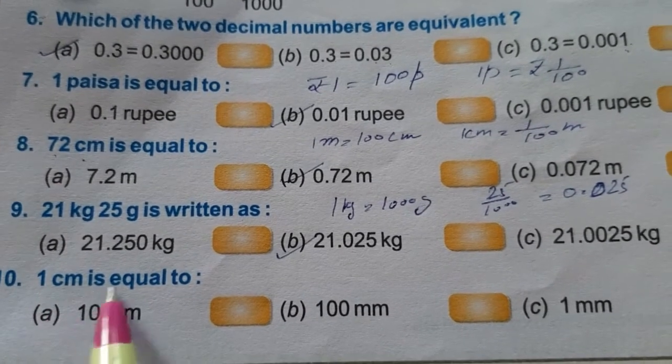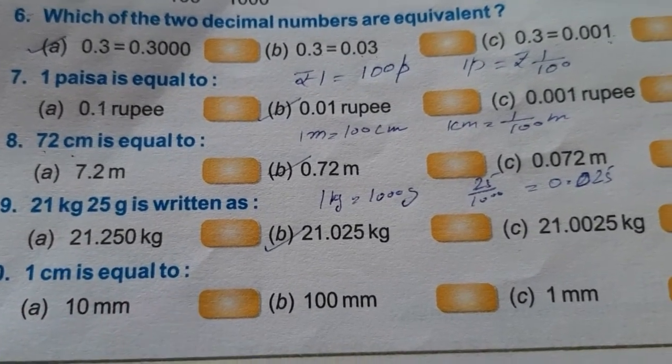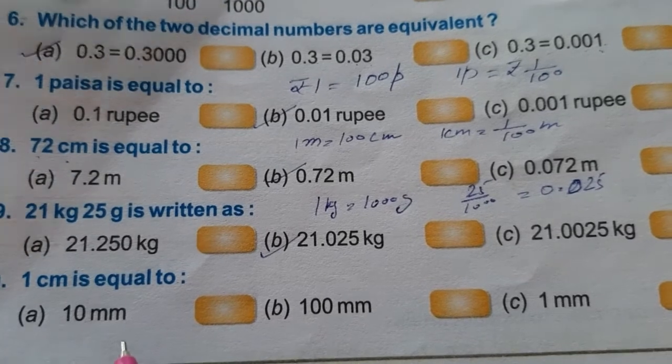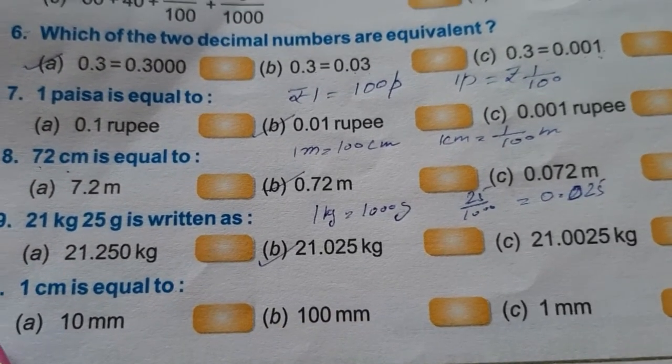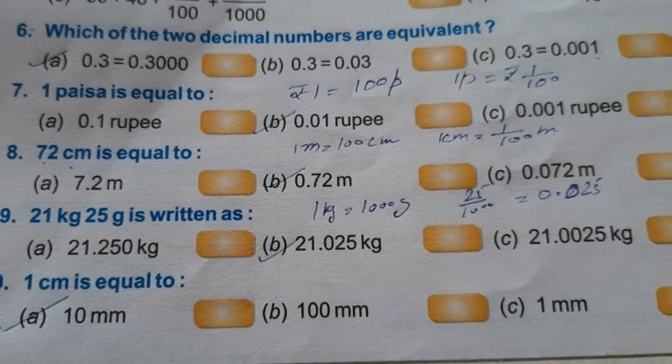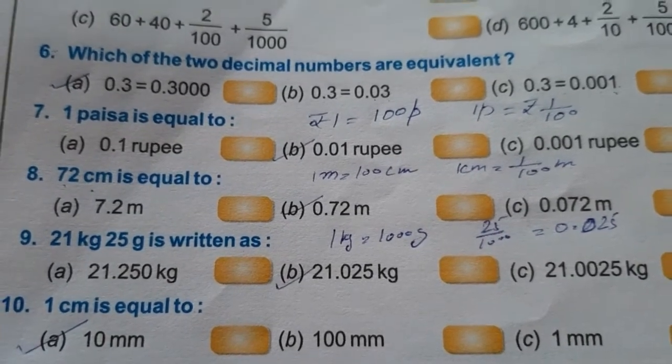Next is 1 centimeter is equal to. 1 centimeter is equal to how many millimeters? So 1 centimeter is equal to 10 millimeters. This is the answer. I hope you understand it. Thank you.